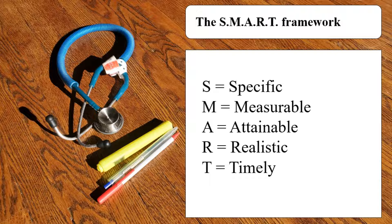Specific means that your goal needs to be very precise — you need to focus on one aspect. For instance, if you say 'my goal is to be able to look after patients,' that's very general. Instead, if you say 'my goal is to be able to look after patients with dementia who are unable to talk,' it becomes more specific about the patient population and what kind of goal you're trying to achieve.